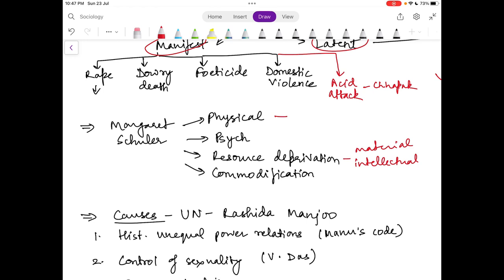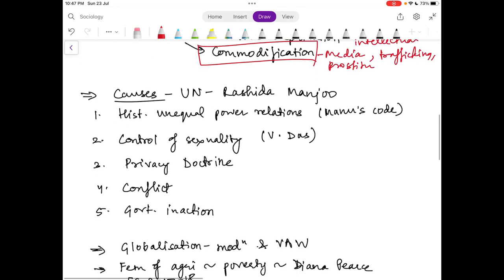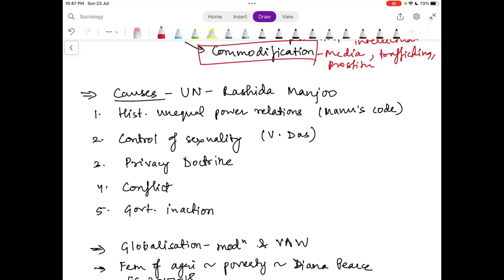Or lack of agency to make your own choice. Then commodification is where media comes into the picture. Trafficking, prostitution—commodification would be anywhere where a human being's value is reduced to a material value. You cannot put a price on human life, but when you do that, that would be commodification. The next thing to cover would be causes. What leads to violence against women? There is some conference proceedings by Rashida Manju in some UN report, and the pointers identified are historically unequal power relations, control of sexuality, the privacy doctrine, conflict, and government inaction.